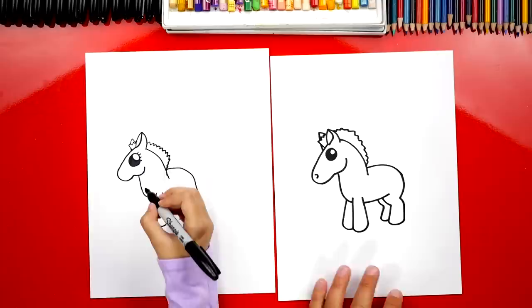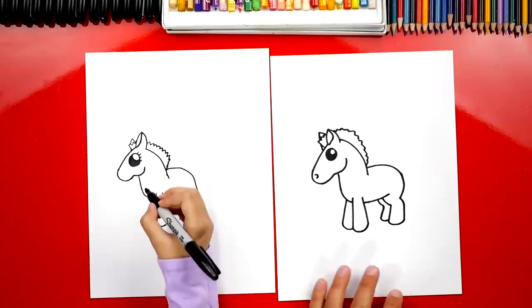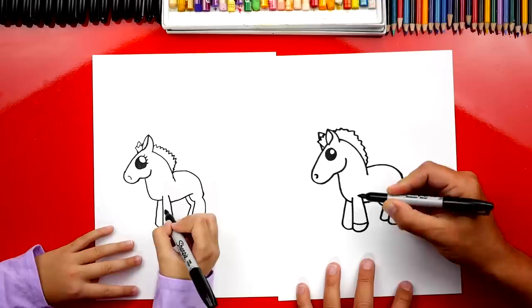Now let's draw the nostril. We'll draw a little C shape. And let's also draw the hooves down here at the bottom. Let's draw a curve on each of the legs. And then also on the back legs too.